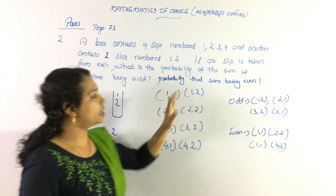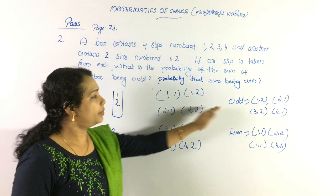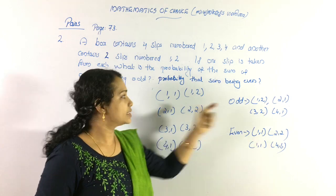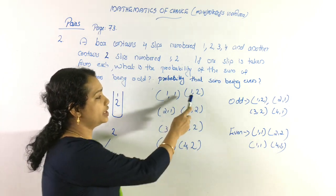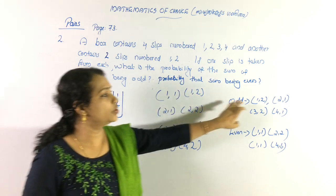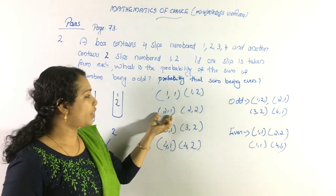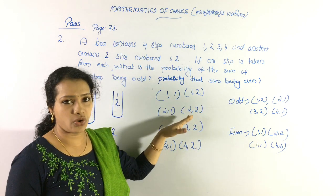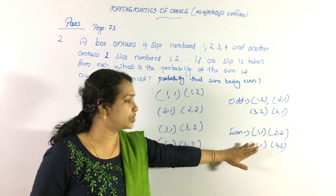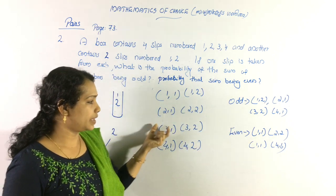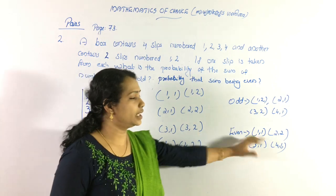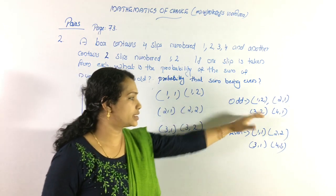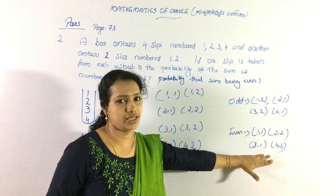Now let's calculate the sums. 1+1=2 (even), 1+2=3 (odd), 2+1=3 (odd), 2+2=4 (even), 3+1=4 (even), 3+2=5 (odd), 4+1=5 (odd), 4+2=6 (even). We have 4 odd sums and 4 even sums.